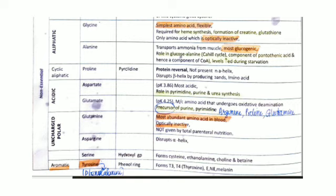Alanine is the most glucogenic amino acid. It has a role in the glucose-alanine cycle, is a component of pantothenic acid, and its level increases during starvation.